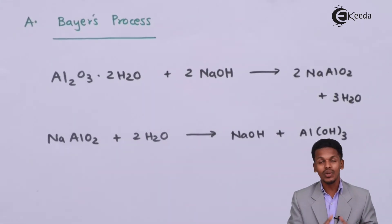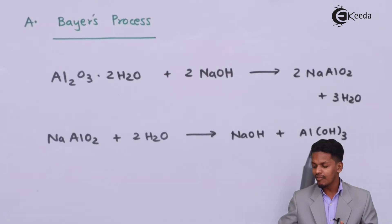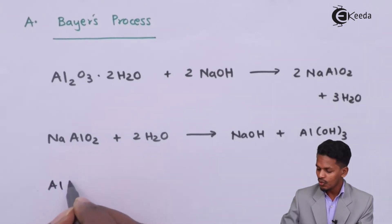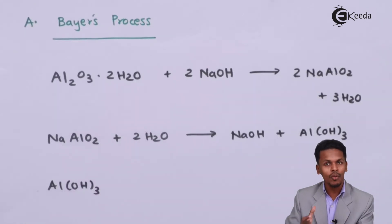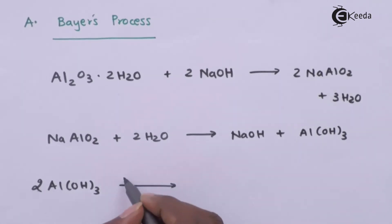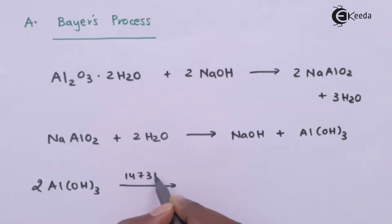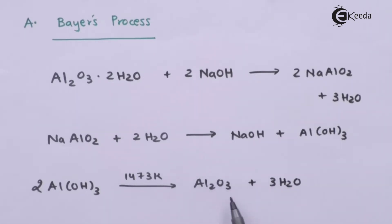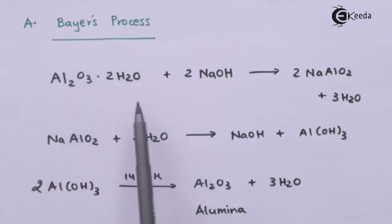But this is not the final step. We still need to remove the impurity from the bauxite ore — that is what leaching achieves. The product obtained so far is aluminum hydroxide, Al(OH)₃. To balance the reaction, we take two moles of Al(OH)₃ and heat it at a temperature of 1473 Kelvin. The product obtained is Al₂O₃ and three moles of H₂O.